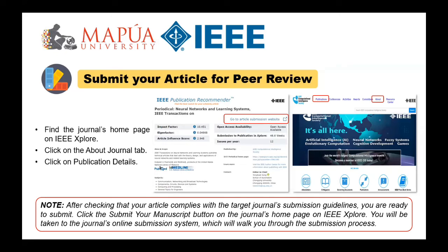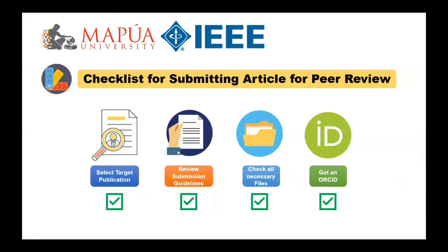Read about the maximum word limit for manuscripts. Investigate the average acceptance rate for the selected journal. Some journals have a short review period of three to six months, while others have a long review period of one to two years. Be aware of this so you can expect the right timeline for receiving peer review feedback. Use the IEEE publication recommender to confirm which publication fits your paper topic.